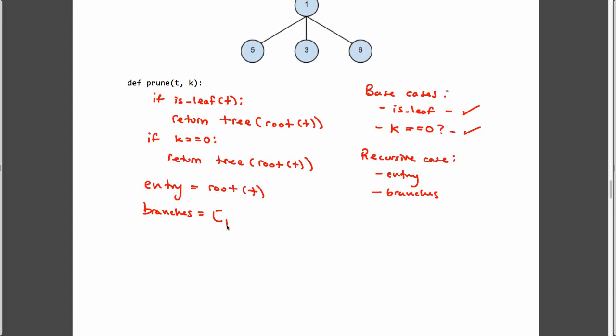So, we're going to write prune b and k minus 1 for b in branches t. For people who haven't watched the video, or my previous video, our two selectors are root and branches. And we know branches always returns a list of trees. Okay?